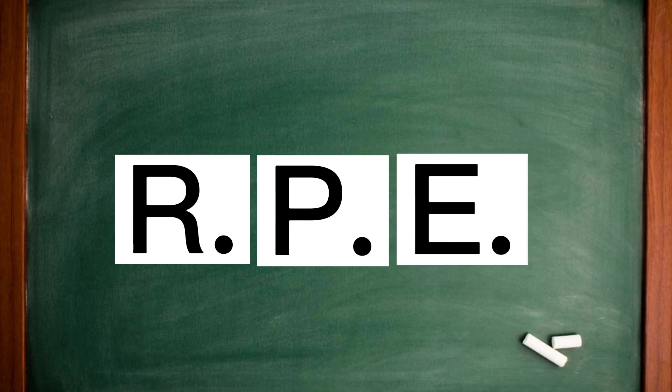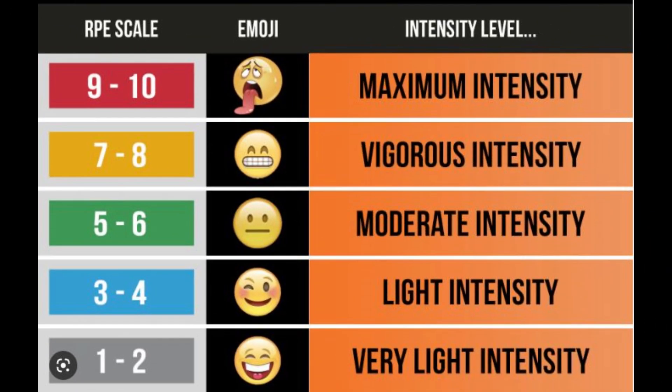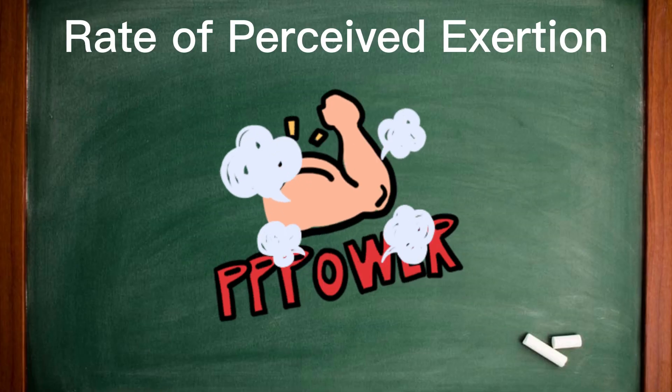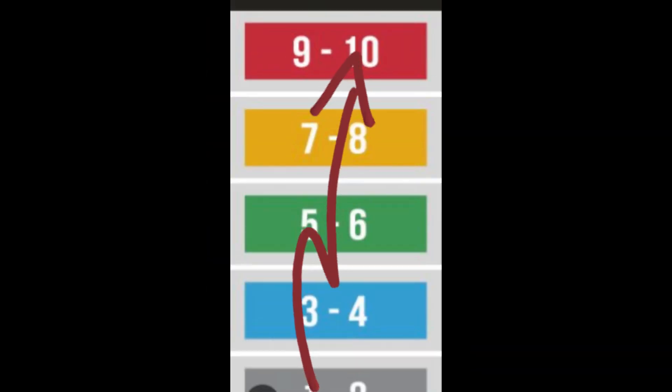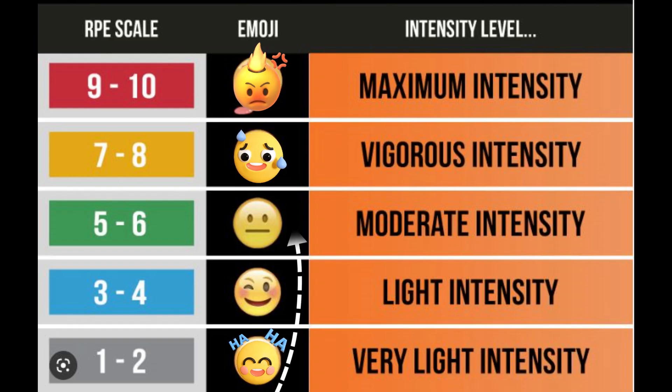RPE, or the rate of perceived exertion, is a scale used to identify the intensity of your exercise based on how hard you feel or perceive your effort to be. The RPE scale typically runs from 0 to 10, with 0 being literally nothing and 10 being the hardest you could possibly exert yourself.